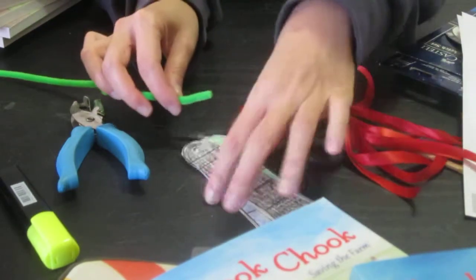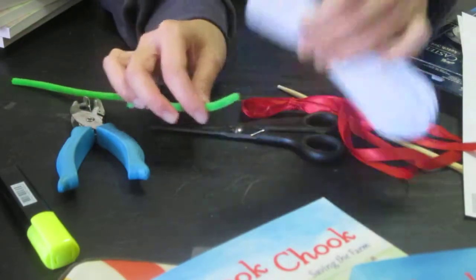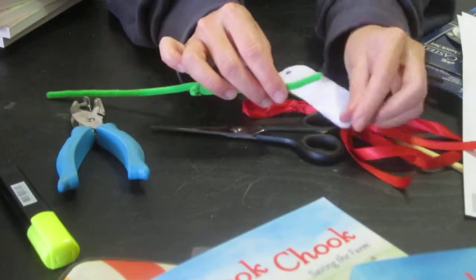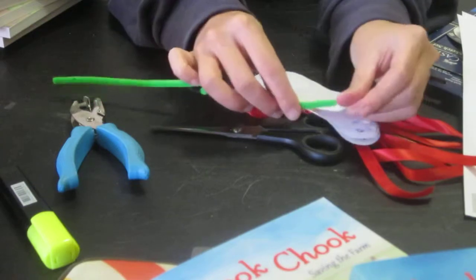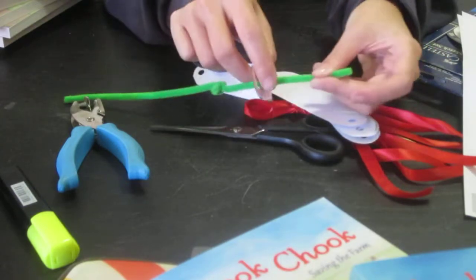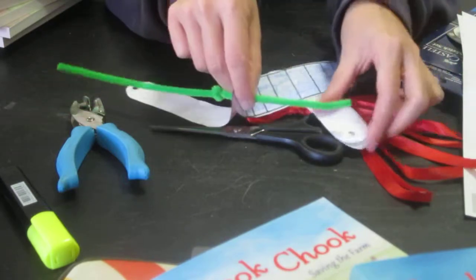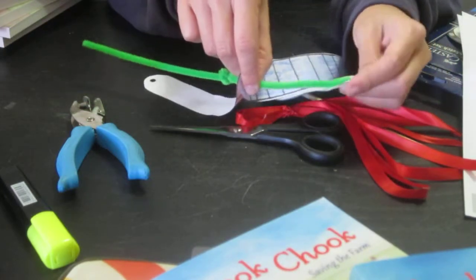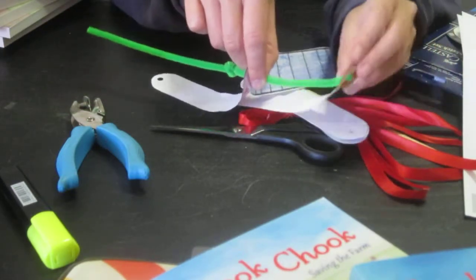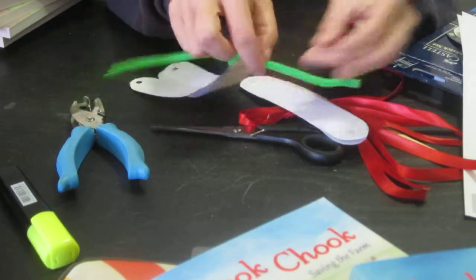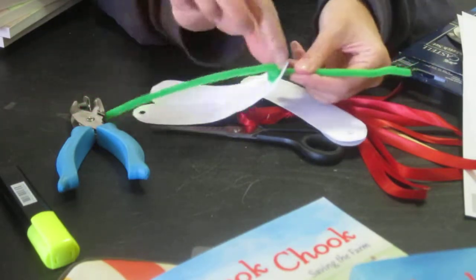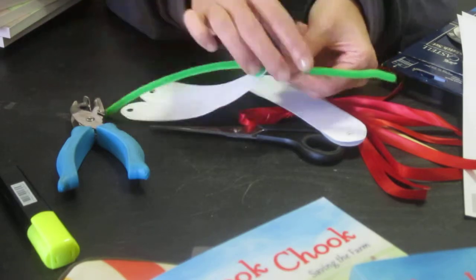So then once you've made a kink about halfway down the pipe cleaner, you're going to take your strips of paper, and you're going to thread the holes of one end of the strips through the pipe cleaner, stacking the pages on top like so. So there are eight strips all together. And you'll see that the kink is keeping them from going all the way down to the other end of the pipe cleaner.